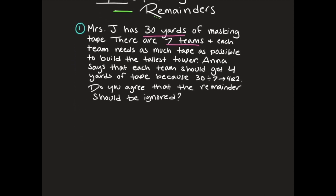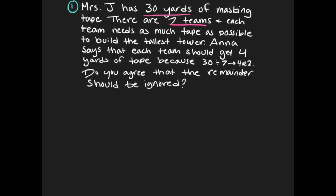I'm going to do that math problem here to show you. We have 30 yards of tape divided by seven teams. Seven can go into 30 four times. Four times seven is 28. When I subtract, I have two left over. This is where Anna gets four remainder two. If we ignore that two, each team could get four yards, but we could take those two yards that are left over and split them up so that the teams could get as much tape as possible.